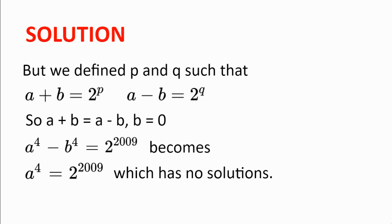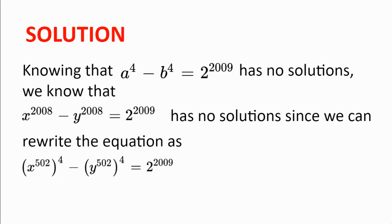We defined p and q such that a plus b equals 2 to the power of p and a minus b equals 2 to the power of q. So if p equals q, then a plus b equals a minus b, which means b equals 0. Then a to the power of 4 minus b to the power of 4 equal to 2 to the power of 2009 becomes a to the power of 4 equal to 2 to the power of 2009, which has no solutions since 2 to the power of 2009 is not a perfect fourth power. Therefore, a to the power of 4 minus b to the power of 4 equal to 2 to the power of 2009 has no solutions.